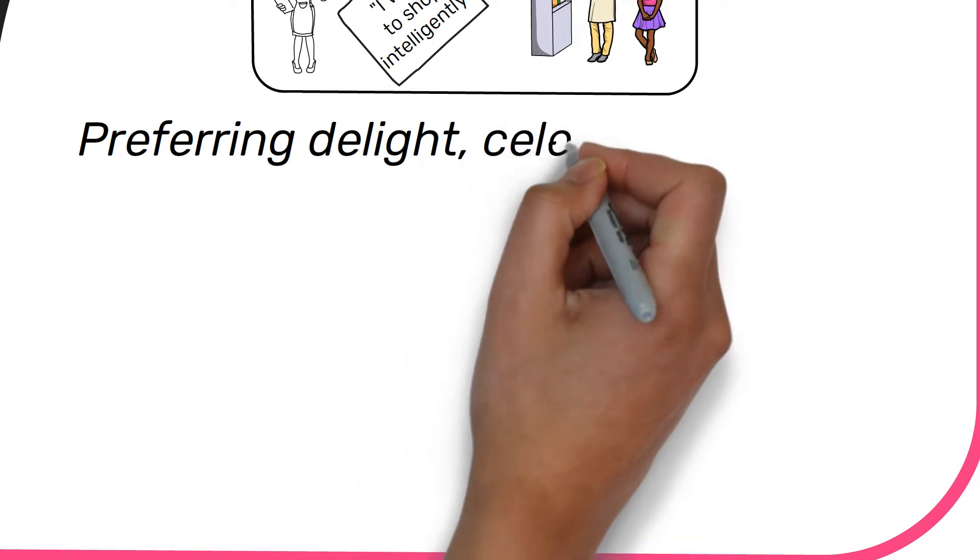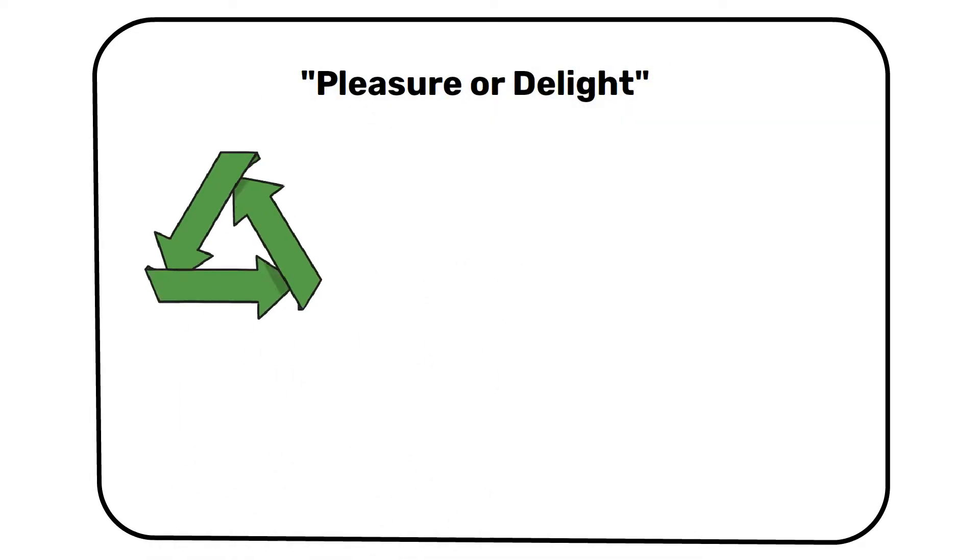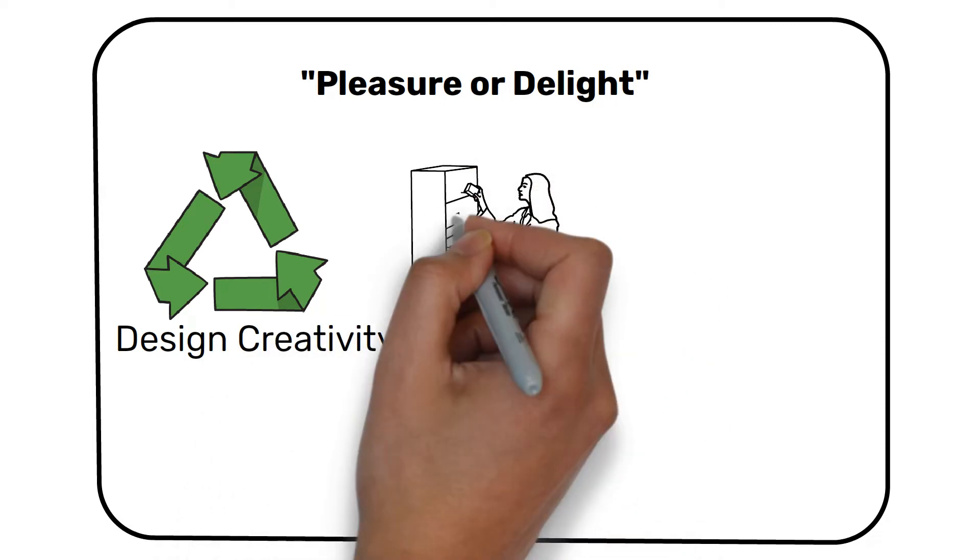Preferring delight, celebration and fun: Another element we can attempt to assess, and perhaps the most readily apparent, is pleasure or delight. Ecologically intelligent products need to be at the forefront of human expression. They can express the best of design creativity, adding pleasure and delight to life.